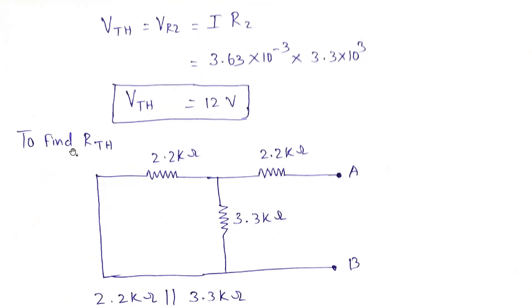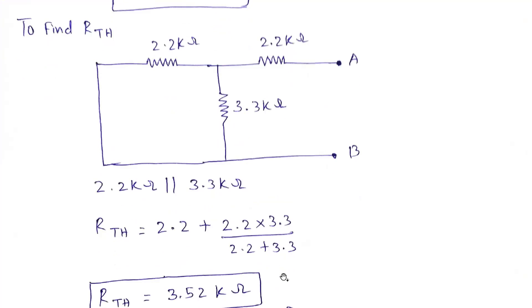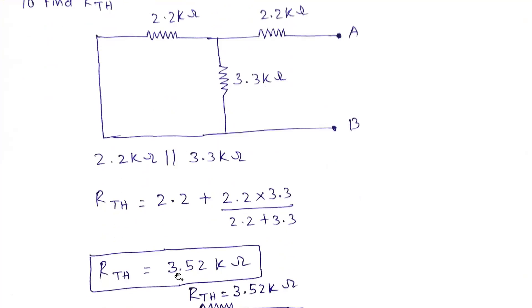The next step is to find RTH. As per the rules of Thevenin's theorem, we short-circuit the voltage source. With the voltage source shorted, resistors 2.2 kΩ and 3.3 kΩ are now in parallel. That gives (2.2 × 3.3) / (2.2 + 3.3). This parallel combination is then in series with the remaining 2.2 kΩ resistor. The equivalent Thevenin resistance RTH works out to 3.52 kΩ.